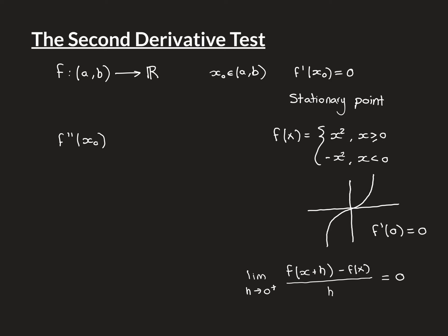So this compound function is differentiable at x = 0 and its derivative is 0, meaning it does have a stationary point at x = 0. However, the second derivative of this function does not exist at x = 0. This illustrates that there are examples of functions with stationary points where the second derivative doesn't even exist at that stationary point, so you have no hope of using the second derivative test.